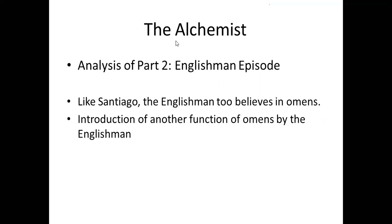Before this episode, it had been difficult to place The Alchemist in time — does the story take place 50 years ago or 500? This vagueness with respect to setting is intentional on Coelho's part. When the Englishman mentions having studied his parents too, the reader can deduce that the alchemist is set sometime during the last century and a half. The Englishman also introduces another function of omens in the novel.